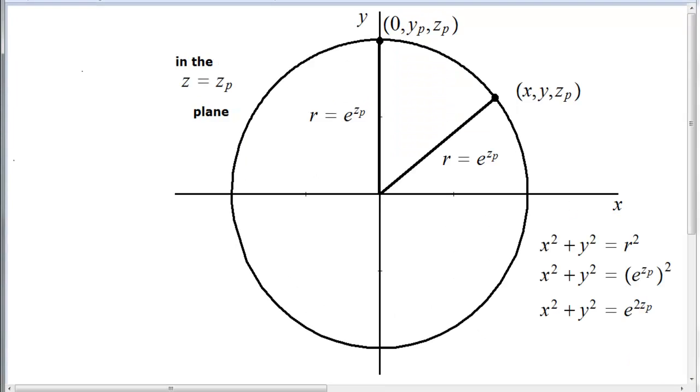Then what has to happen is, notice, x square plus y square will have to be the radius square. And who is the radius? e to the power zp. And square of that is what? e to the power 2 zp.